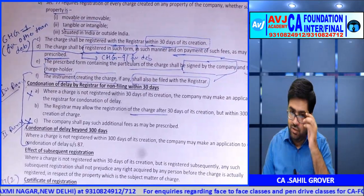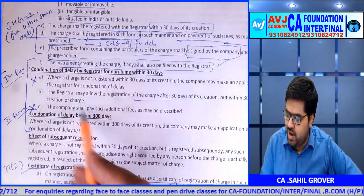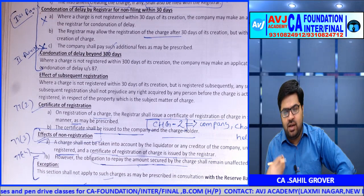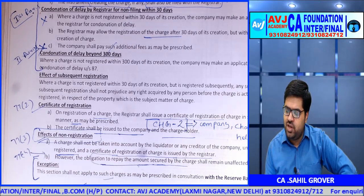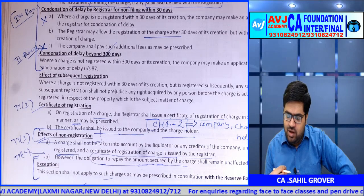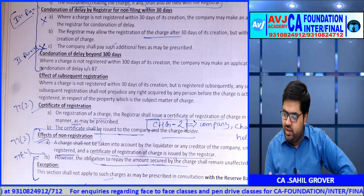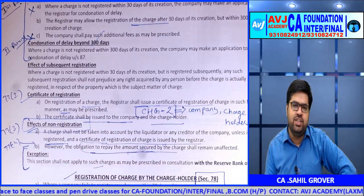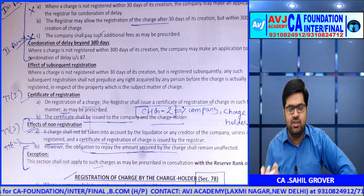Section 77 gives the general rule in two provisors. Certificate of registration of charges is issued in prescribed form CHG2. Effect of non-registration: if a charge is not duly registered, it shall not be taken into consideration by the liquidator or any creditor of the company. However, the company's obligation to pay the amount secured by the charge remains unaffected — money will be paid but as an unsecured creditor.